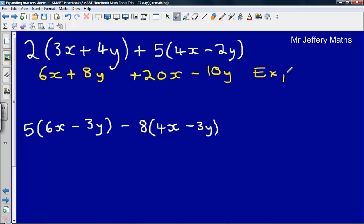Now we just need to simplify. So we'll collect the like terms together. 6x and plus 20x gives us 26x in total, and then we've got 8y minus 10y, so that leaves us with minus 2y. So that is our simplifying stage.